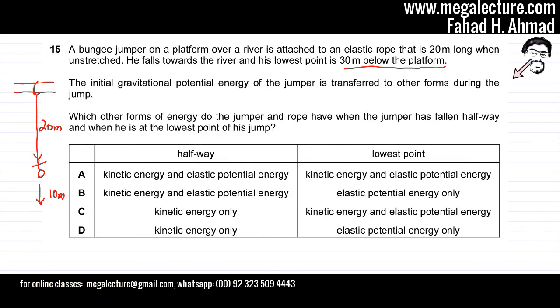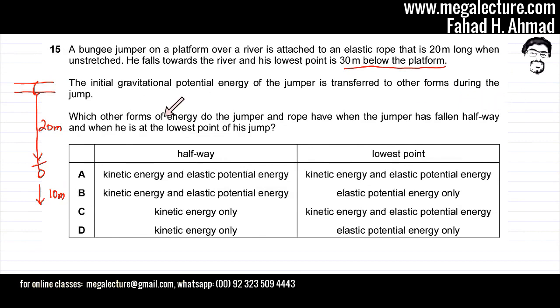The question then reads that the initial gravitational potential energy of the jumper is transferred to other forms during the jump. Which other form of energy do the jumper and rope have when the jumper has fallen halfway, and when he is at the lowest point of his jump?